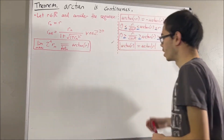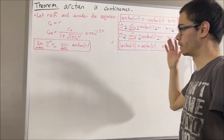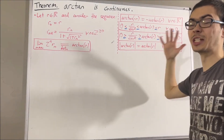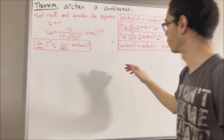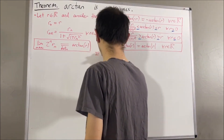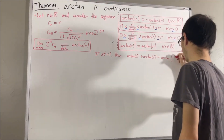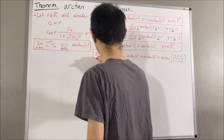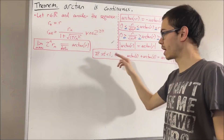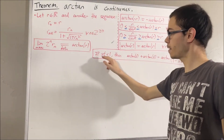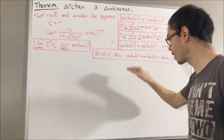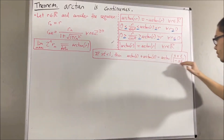Finally, another property of the arctangent function we proved was an addition formula. Given any two real numbers S and T, if S times T is less than 1, then the addition formula equality holds.